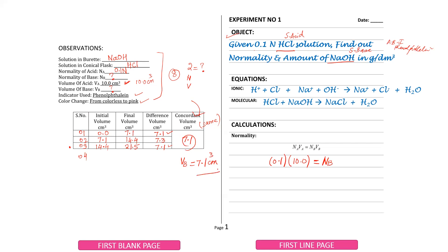We have the volume of base from the concordant reading, which is 7.1 cm³. Now we will solve the calculation. We have written NB. So: 0.1 multiplied by 10.0 divided by 7.1. Doing this calculation gives 0.141.